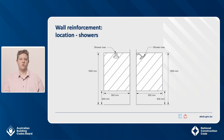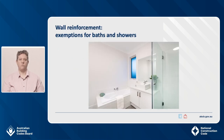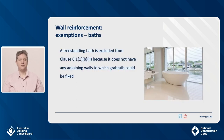There are some instances where an exemption may apply. For showers and baths, reinforcing only needs to be provided for the available width of the wall. This includes where the available wall is narrower than the required reinforcing width, or where a window encroaches in the reinforcement zone. The window in the end wall encroaches most of the zone for the nogging or sheeting — it's not necessary to move the window to accommodate reinforcing, but reinforcing must be provided where the window does not encroach the reinforcement zone. The rear wall has no window and reinforcing must be provided. A freestanding bath is excluded from the requirement to provide reinforcement because it does not have adjoining walls to which grab rails could be fixed.